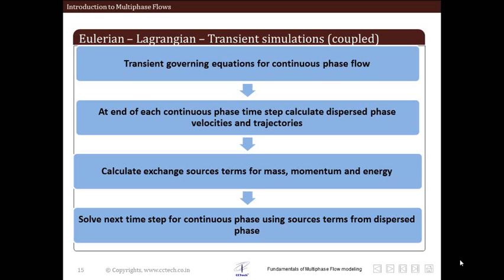Next, put the mass, momentum, and energy source terms into the source term of the governing equations for the continuous phase. Then for the next time step, solve the continuous phase governing equations again using the source terms calculated from the earlier time step. We repeat this procedure until we get a converged solution for each time step.